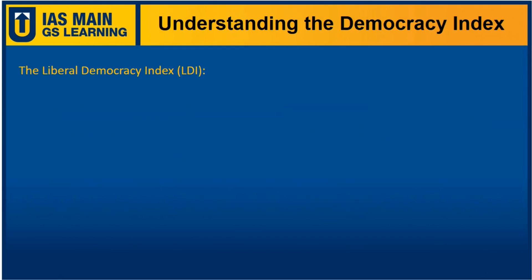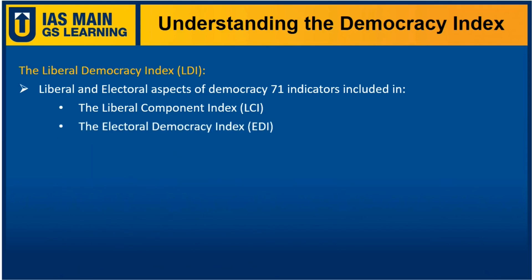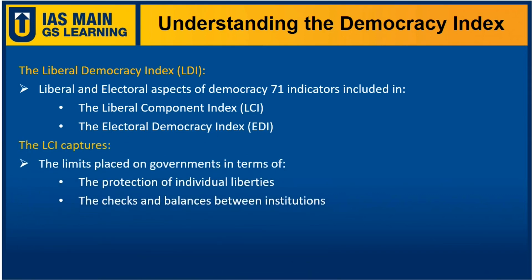Before discussing the present question, we need to understand the democracy index. This democracy index is called the Liberal Democracy Index, which is based upon 71 indicators. These 71 indicators have further been classified into two different indexes. One is called the Liberal Component Index (LCI), and the second is called the Electoral Democracy Index (EDI).